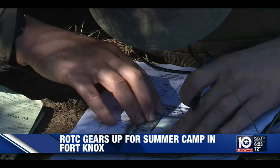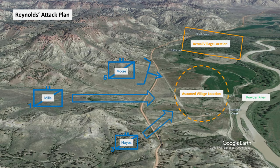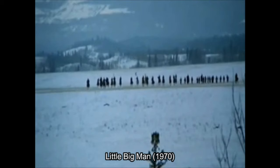Like some nervous cadet at ROTC summer camp, Reynolds formulated a half-assed plan of attack based on a misunderstanding of the actual location of the village. His attack orders were less than clear, but he did issue a general outline of his tactical plan. Captain James Egan's company of Noyes' battalion was to approach the village and charge mounted with drawn revolvers. Meanwhile, Noyes and his remaining company would capture and drive the Indian pony herd to the south. Moore's battalion was to dismount and move to the bluffs overlooking the village to a support-by-fire position. Eventually, Reynolds ordered Mills to follow Moore and assist as practicable.